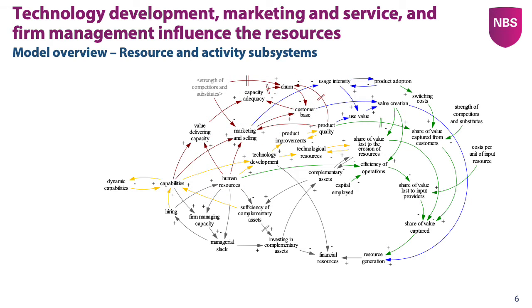And then the final subsystem here is the gray one, which is about the firm's management. It comes down to the fact that management won't be fully occupied with managing the existing firm. In that case, they have some energy real slack, which they can use to make and implement growth plans, for example by hiring. And hiring is critical because it increases the human resources, so we've got more inputs to all the other activities — we can market more, service more, develop more. But it also affects capabilities negatively because new employees lack firm-specific knowledge.